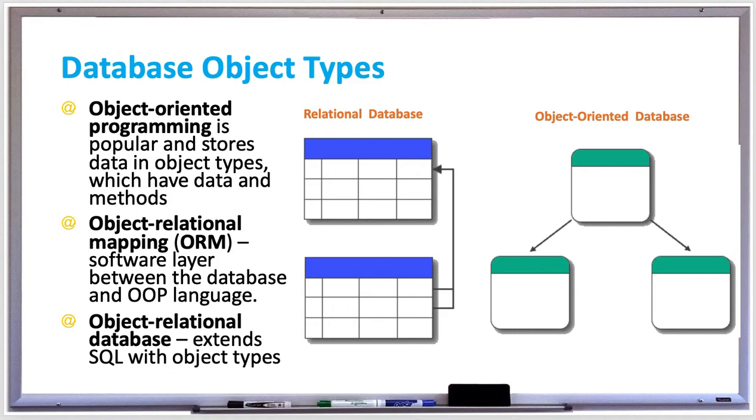There's create type body as, which specifies the code or body of each function and procedure associated with the object type. There's create table of, which creates a table from an object type.